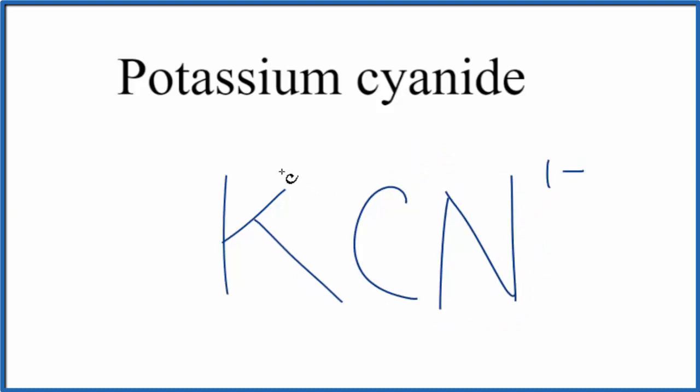in group 1 on the periodic table, that has a 1 plus ionic charge. And when we have a compound like potassium cyanide, this is a neutral compound - it doesn't say ion, there's no plus or minus. So when we